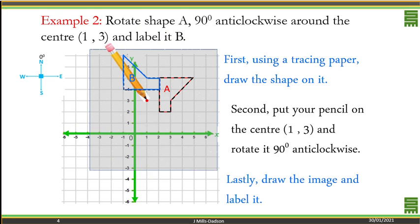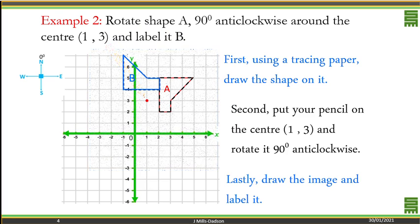Then you label it. Okay, so we talked about 90 degrees clockwise, 90 degrees anti-clockwise. Let's look at 180 degrees.